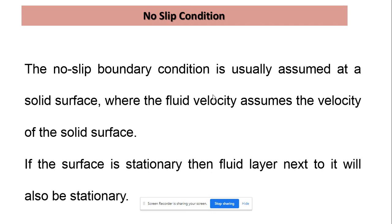If the surface is stationary, then the fluid layer next to it will also be stationary. If the solid surface is moving with a certain velocity, the fluid layer next to the solid surface will acquire the same velocity as the solid boundary.